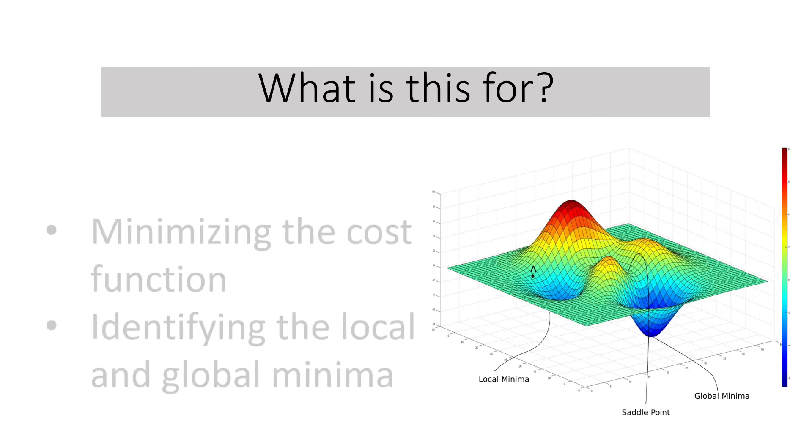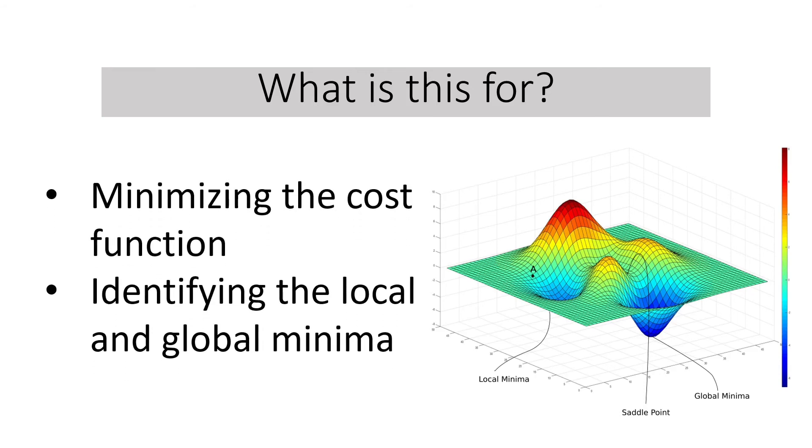What is this for? Why do we have to study this? In optimization problems, we always prefer to minimize the cost function. To do it, we use the negative log likelihood function. It is also very important in our study of gradient descent in identifying the local and global minima.